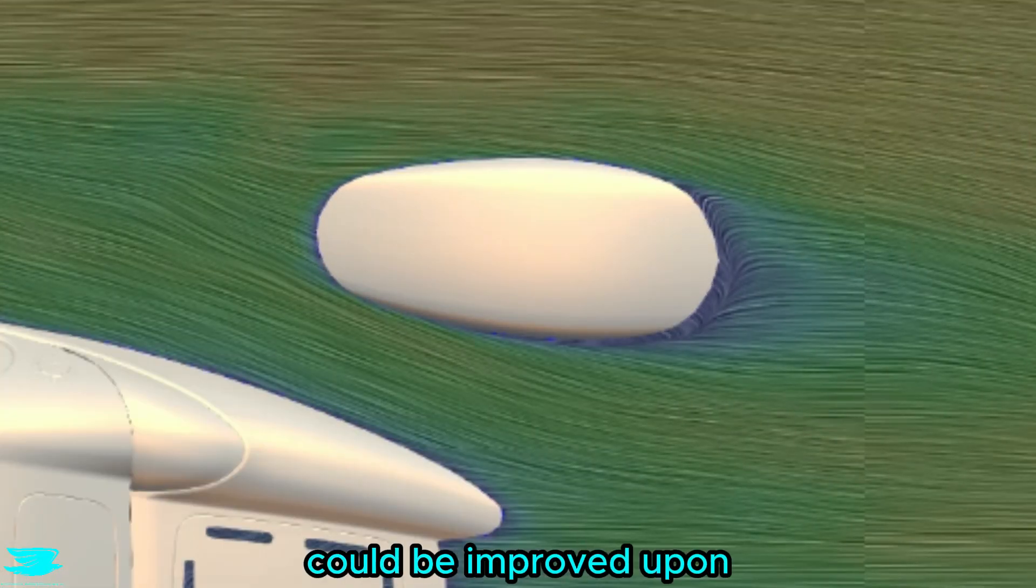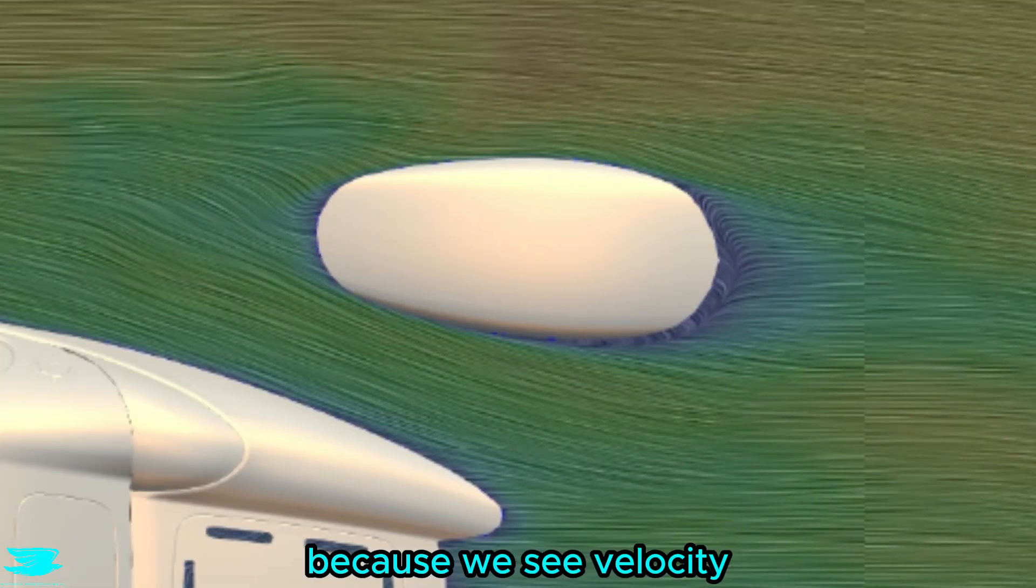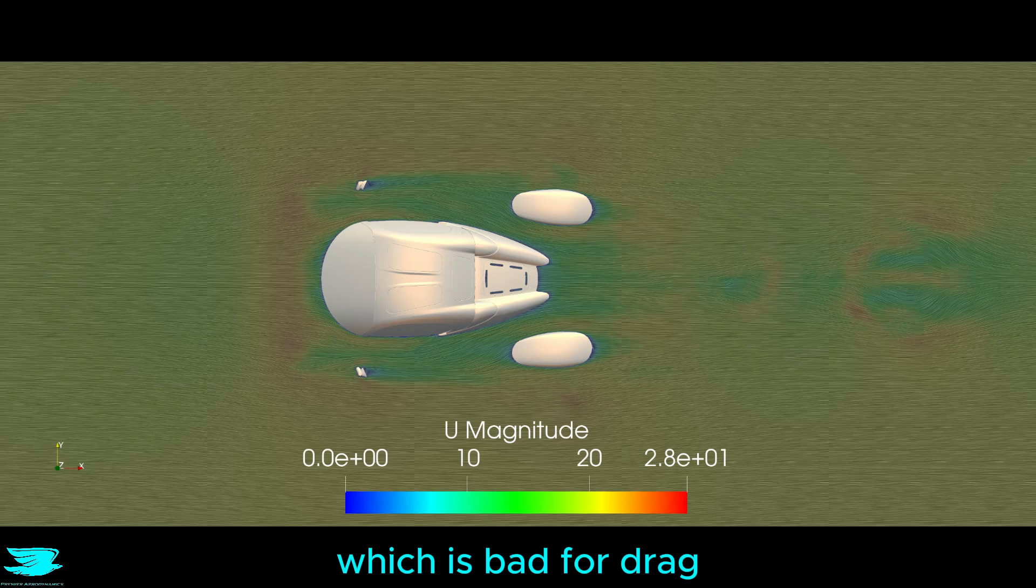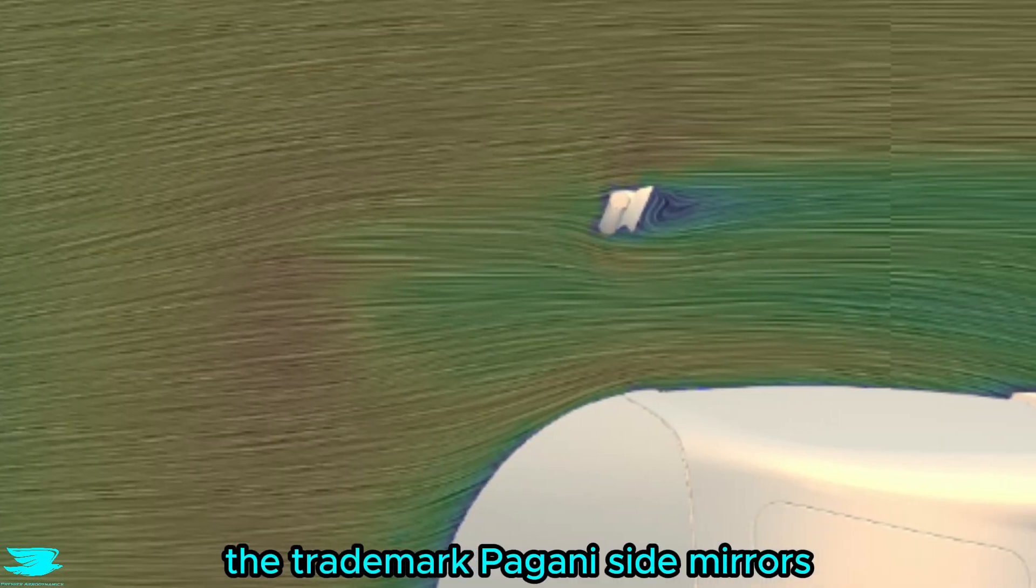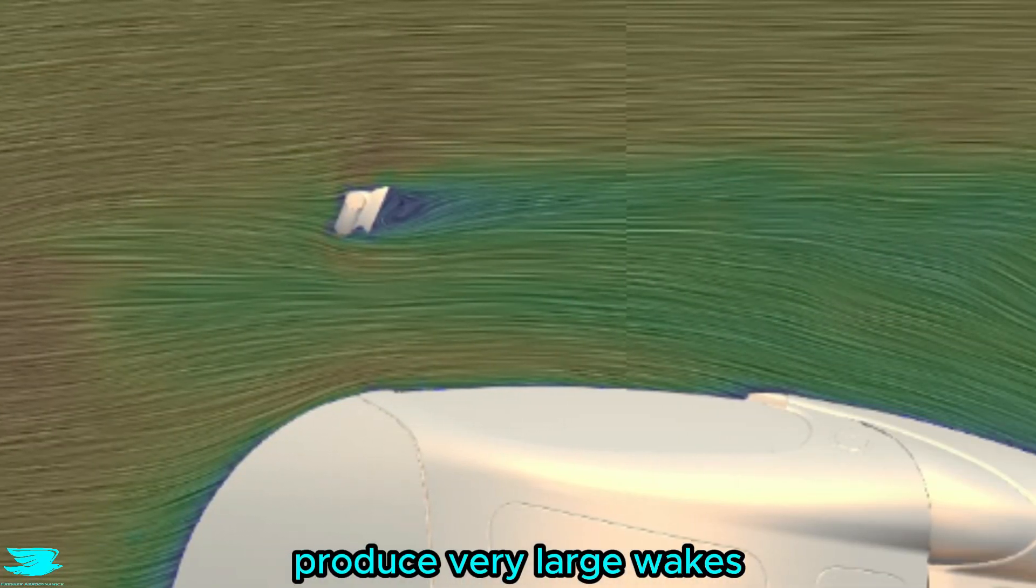The flow around the rear wheel hubs could be improved upon because we see velocity deficits behind them, which is bad for drag. What's more, the trademark Pagani side mirrors produce very large wakes.